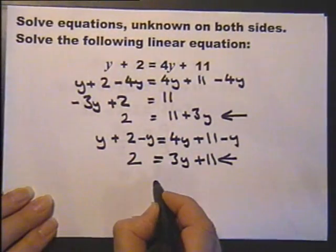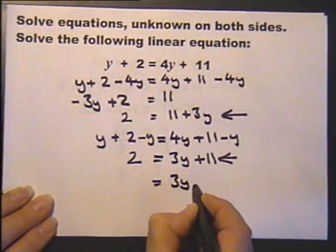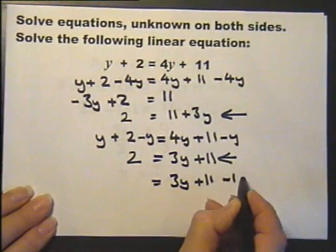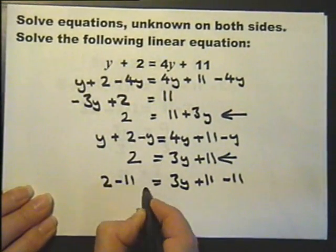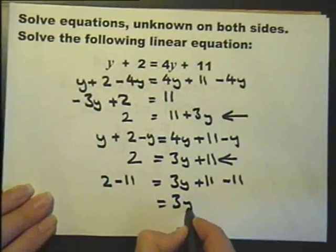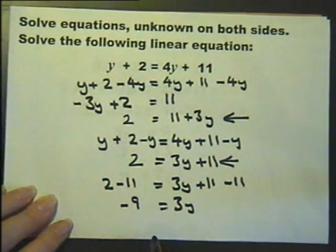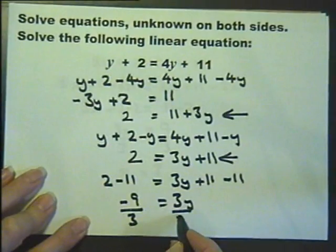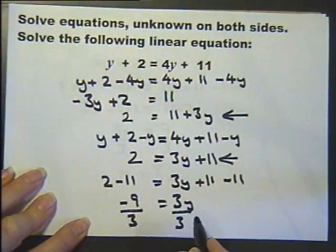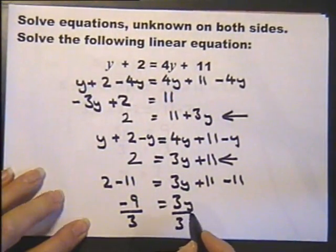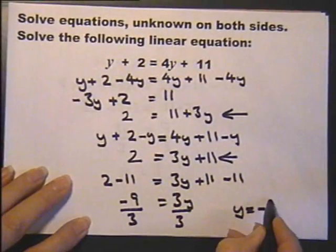By subtracting the 11 from both sides now, which will leave me with 3y there and minus 9 there. Dividing both sides by 3, this will cancel leaving me with minus 3 equals y, or y equals minus 3.